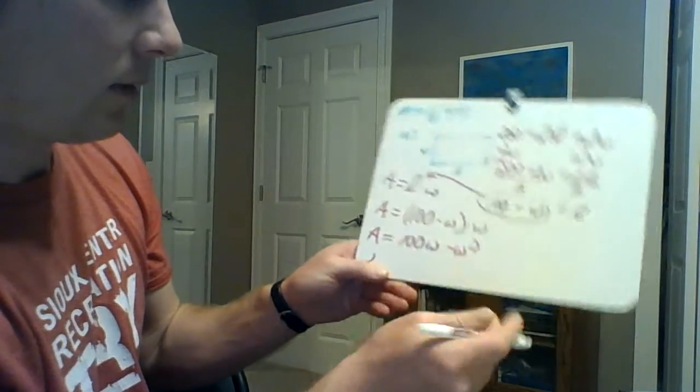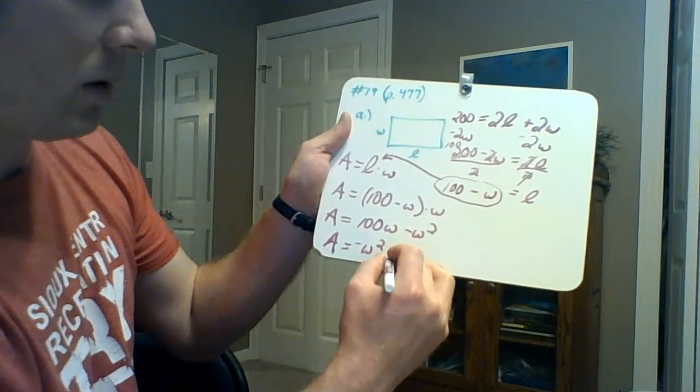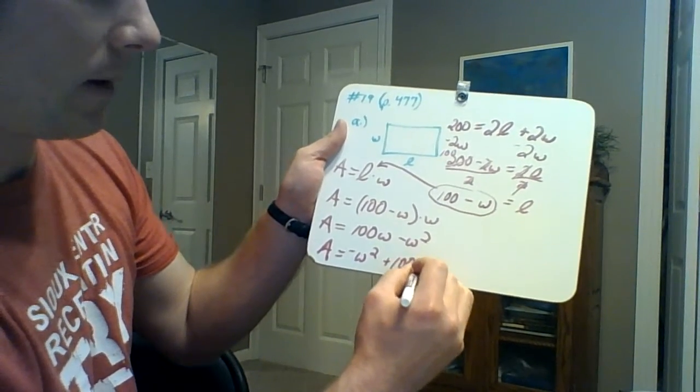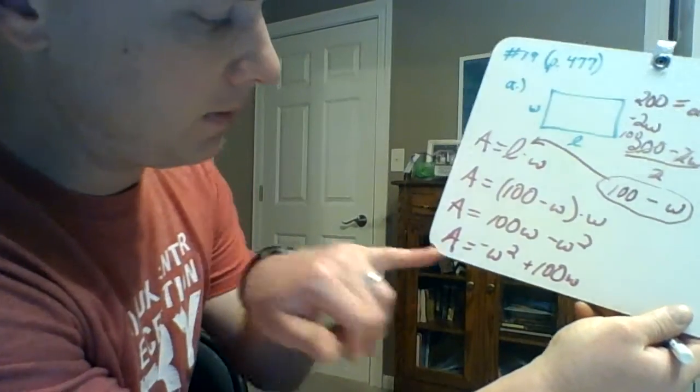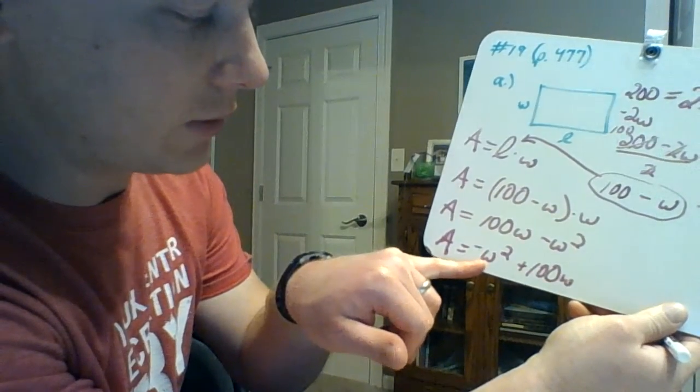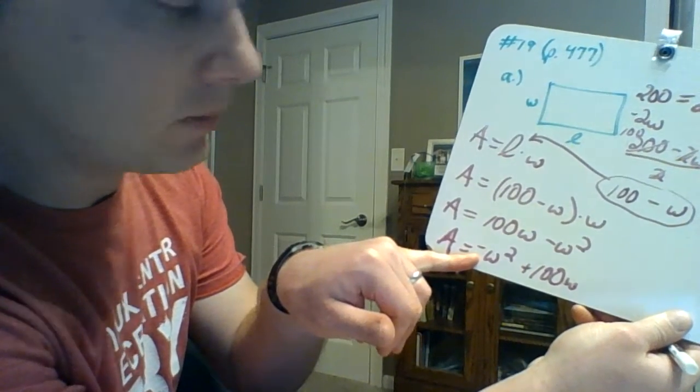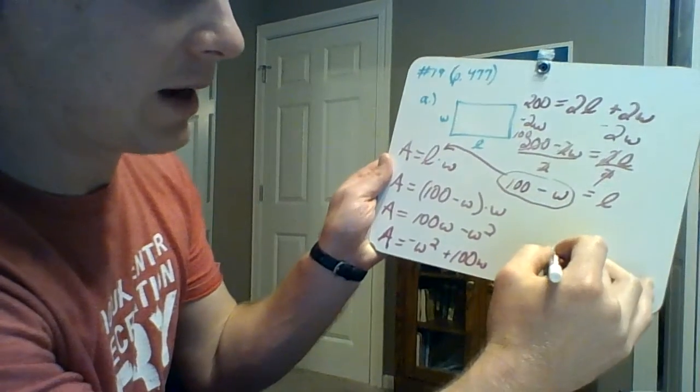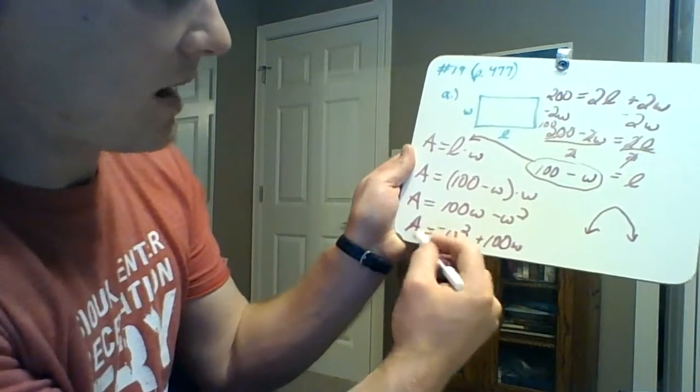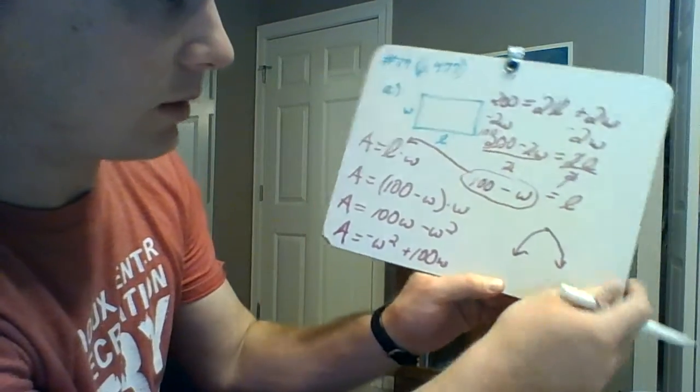We now have a quadratic function: negative W squared plus 100W. This term right here, the coefficient of the squared term, that's our a value, our lowercase a value. That's negative, so we know it's going to be an upside down parabola. And we want to find the maximum area, so we want to look for that highest point there.